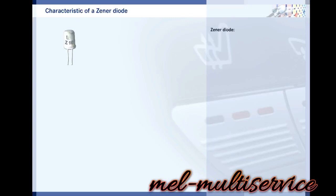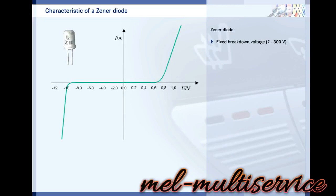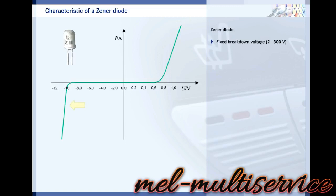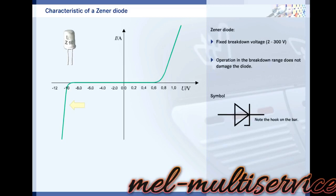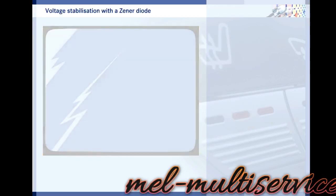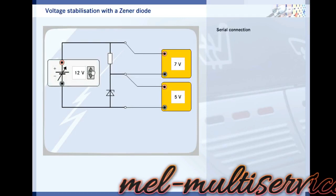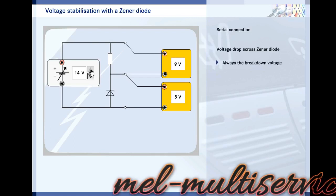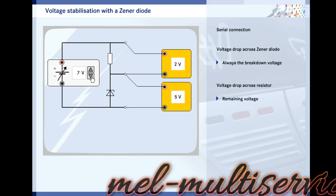Both breakdown effects can be exploited in the production of Zener diodes. These are diodes manufactured with a precisely defined breakdown voltage of between 2 and 300 volts. The characteristics of Zener diodes are essentially the same as those of normal diodes. The only difference is that the breakdown is controlled, and operation in the breakdown range does not damage the Zener diode. Zener diodes are normally operated under reverse bias. The breakdown voltage is always across the Zener diode, while the rest of the voltage is across the series resistor, which also limits the breakdown current.